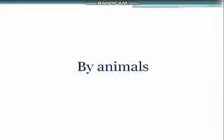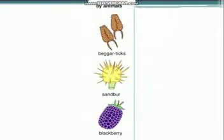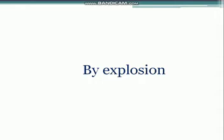Dispersal of seeds by animals — human beings and animals eat certain fruits and throw away the seeds. Some seeds have hooks or spikes that stick to the hairy skin of animals or the clothing of human beings and are carried to different places. Some fruits are eaten by animals and birds, but their seeds pass out undigested and unharmed in their droppings, reaching different places.